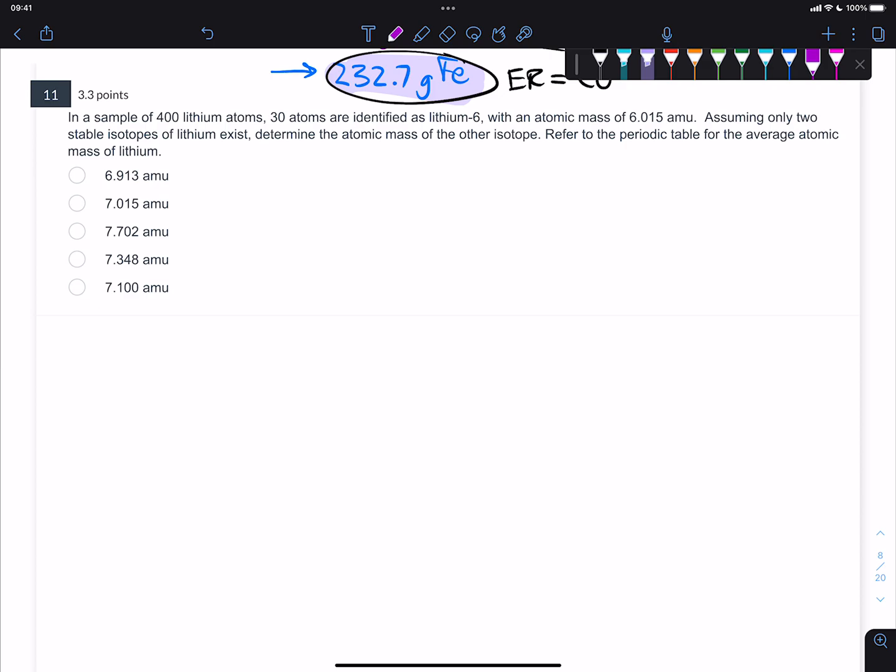This problem says in a sample of 400 lithium atoms, 30 of them are lithium-6 which has an atomic mass of 6.015. If you assume you have two stable isotopes of lithium, so we can call that the lithium-6 isotope, and then you also have the other one. We know it's seven, or you might know it's seven, but let's say we don't know.